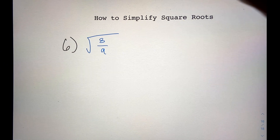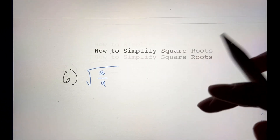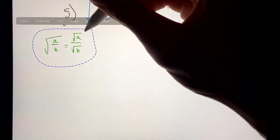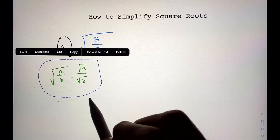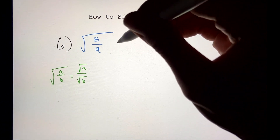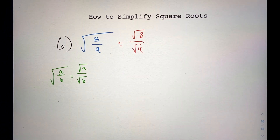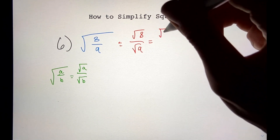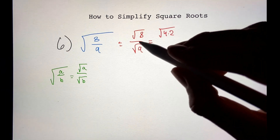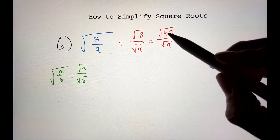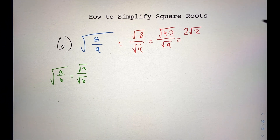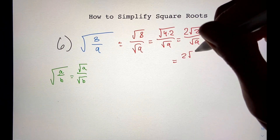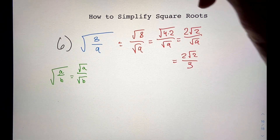Now let's do number 6 — the square root of 8 over 9. Using the same property, this equals the square root of 8 over the square root of 9. Since 8 isn't a perfect square, I'll rewrite it as the square root of 4 times 2, still divided by the square root of 9. Since 4 is a perfect square, the square root of 4 is 2, so we get 2 times the square root of 2 over the square root of 9, which is 3. The final answer is 2 times the square root of 2, all over 3.